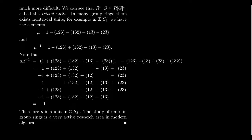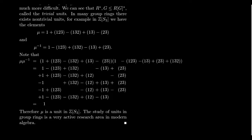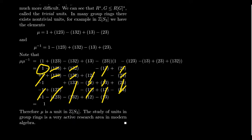If we actually work out mu times mu-inverse — feel free to pause and verify — there are five terms in each factor, giving 25 possible products to compute. But as you work through them, everything cancels out: the (1 2 3) terms cancel, the (1 3 2) terms cancel, the (1 2), (1 3), and (2 3) terms all cancel. You're left with only the identity element 1. So this is in fact an authentic non-trivial unit of the group ring ZS3.